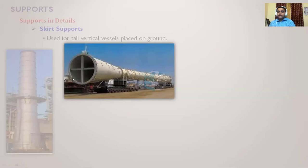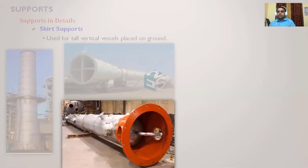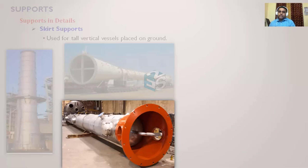This tall column is under fabrication in the shop. You can see the skirt support here is not having any gussets or top ring — it only has a base ring. The question of when to go for only a base ring, base ring with gusset, base ring with gusset and a top plate, or base ring with gusset and top ring together will also be discussed.